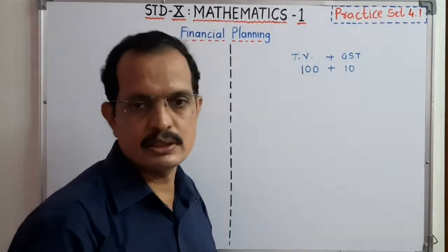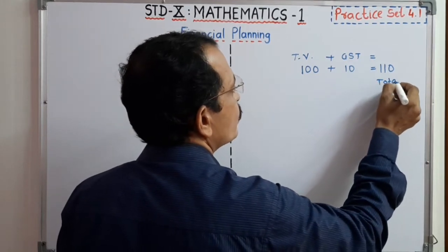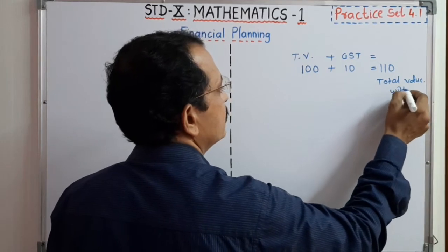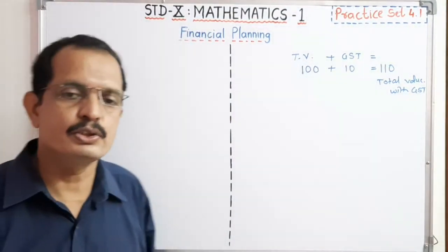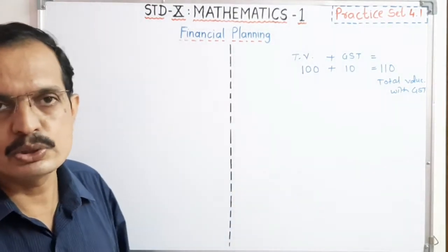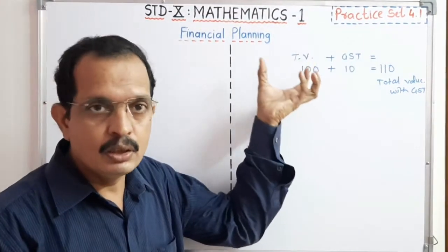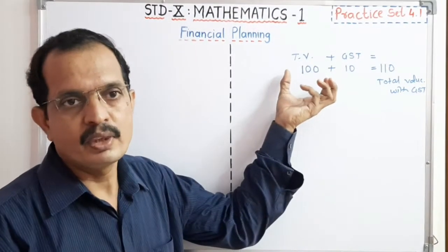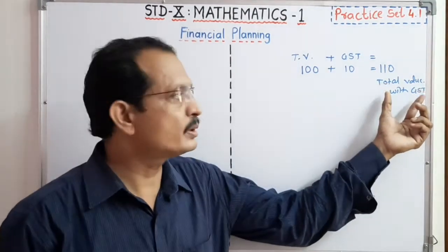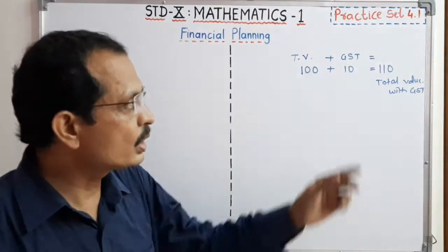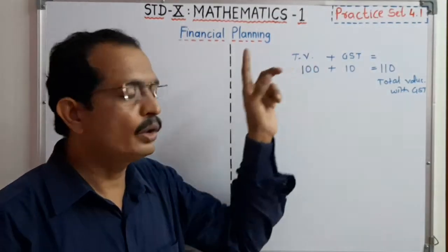Suppose GST is 10 rupees, then we get 110 rupees. This is the total value with GST. If you understand this concept, it is very easy to solve questions 5 and 6. Taxable value is the original value of the product. If we add GST to it, we get the total value — that total value means GST is added to the taxable value.